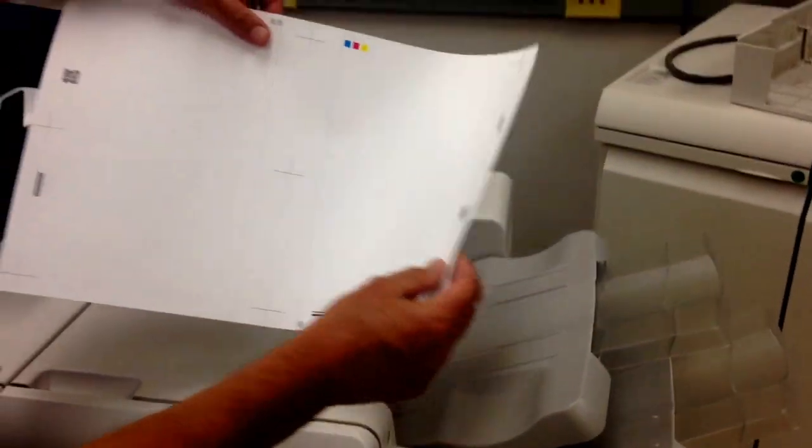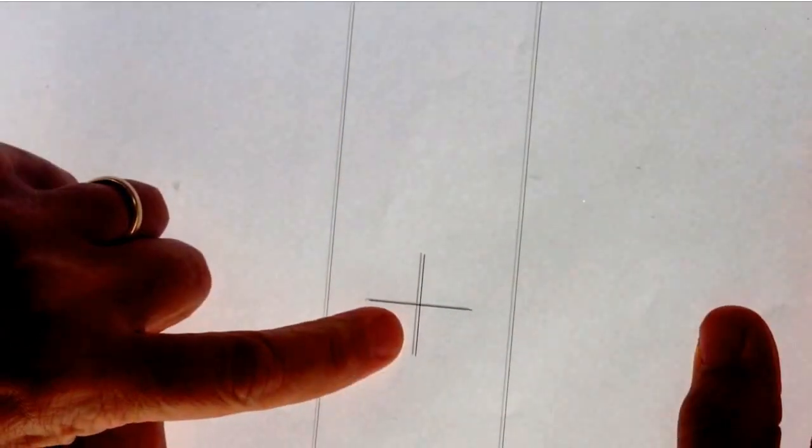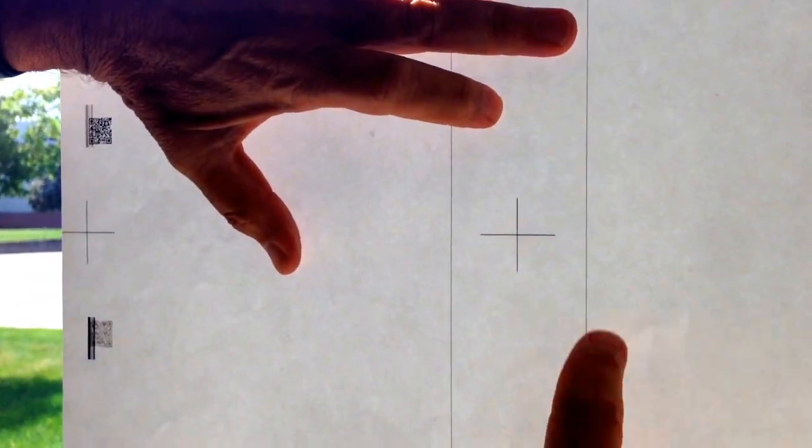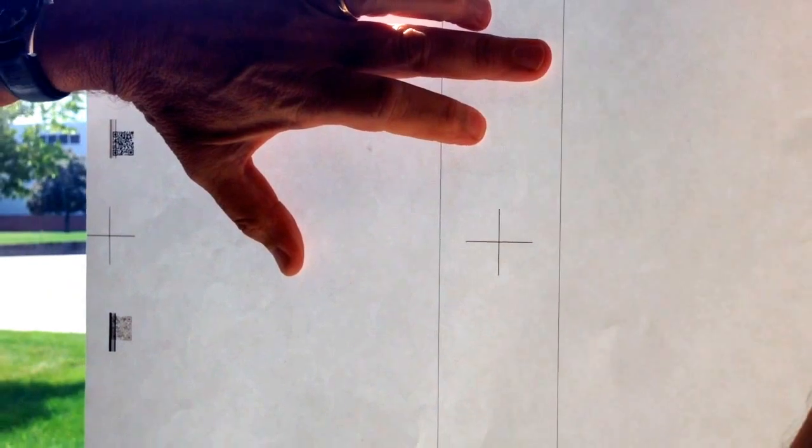Okay. Here's my test sheet. It's printed a pattern on front and back. And I'll tell you what. Let's go to a light table and we'll have a look at the before and after registration using automated C-cut.